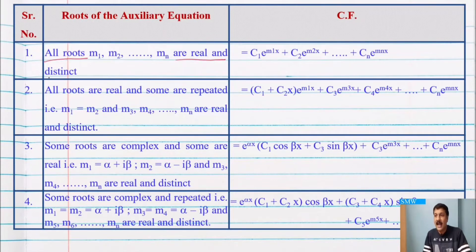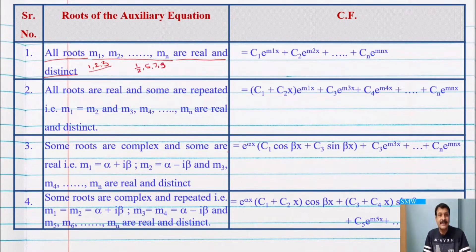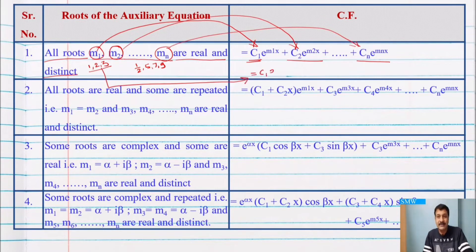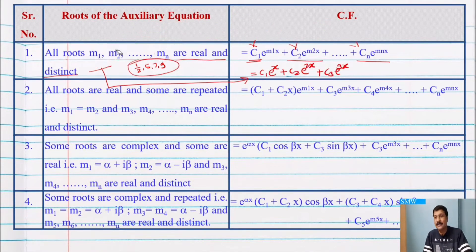In Case 1, all roots m1, m2, dot dot dot, mn are real and distinct — for example, 1, 2, 3, or 1/2, 5, 7, 9. In this case, the complementary function is: yc = c1 e^(m1 x) + c2 e^(m2 x) + ... + cn e^(mn x). For the example with roots 1, 2, 3, we write c1 e^x + c2 e^(2x) + c3 e^(3x). Note that the sequence of roots does not matter when writing the CF.